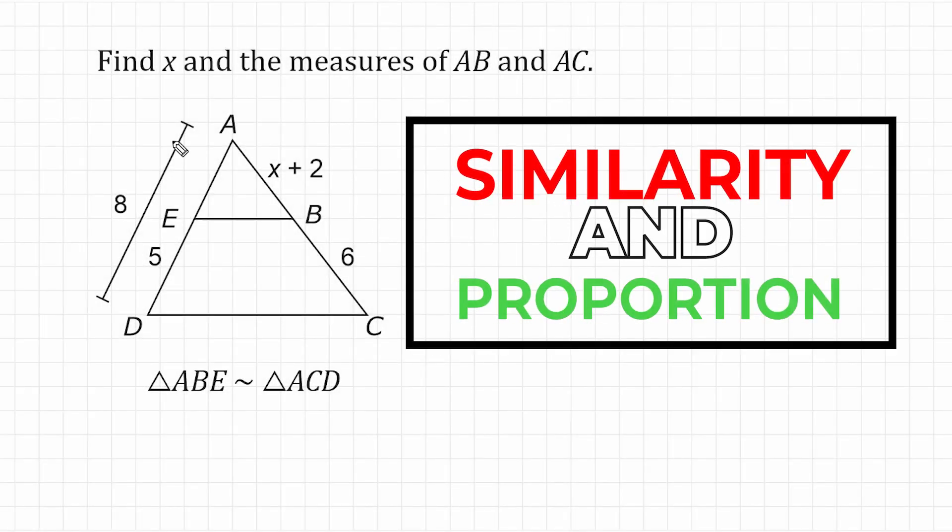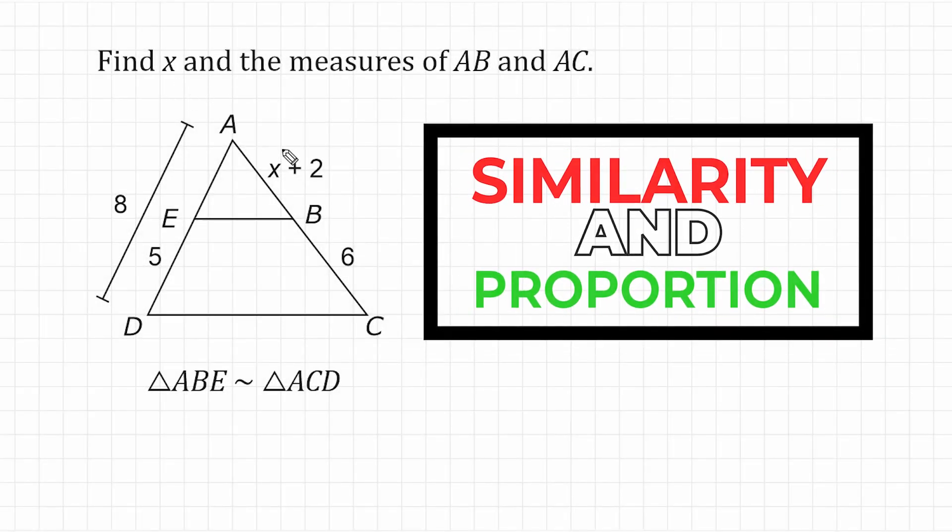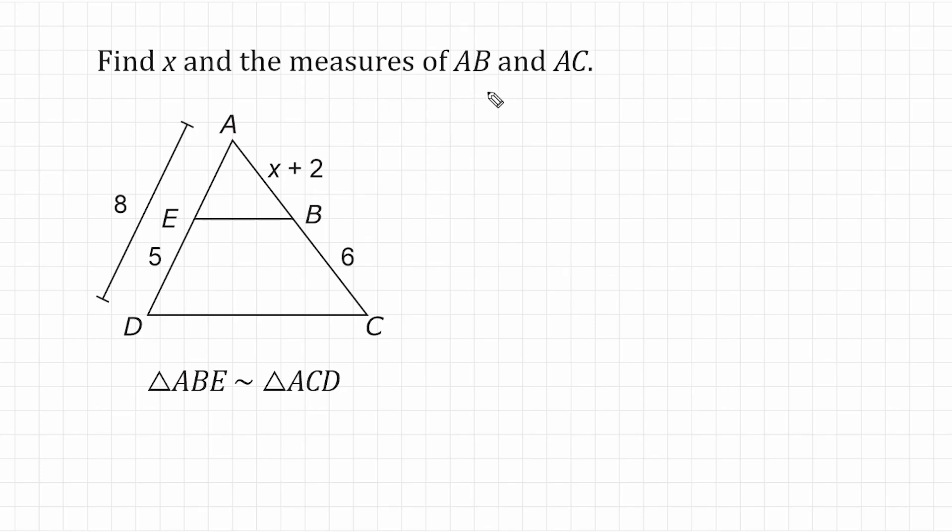All right, in this problem, we have to find the value of x, and we also have to find the measures of line segments AB and AC. It is given that triangle ABE, which is the smaller triangle on top, is similar to the larger one, ACD.